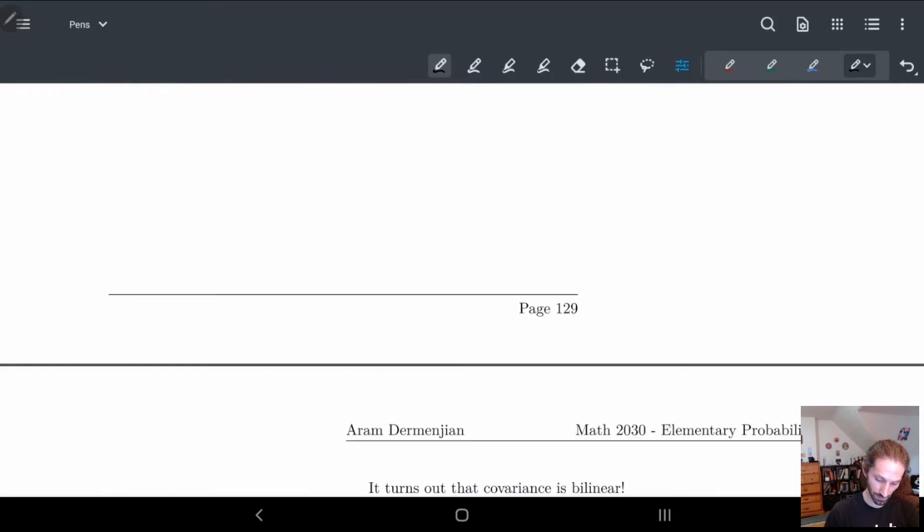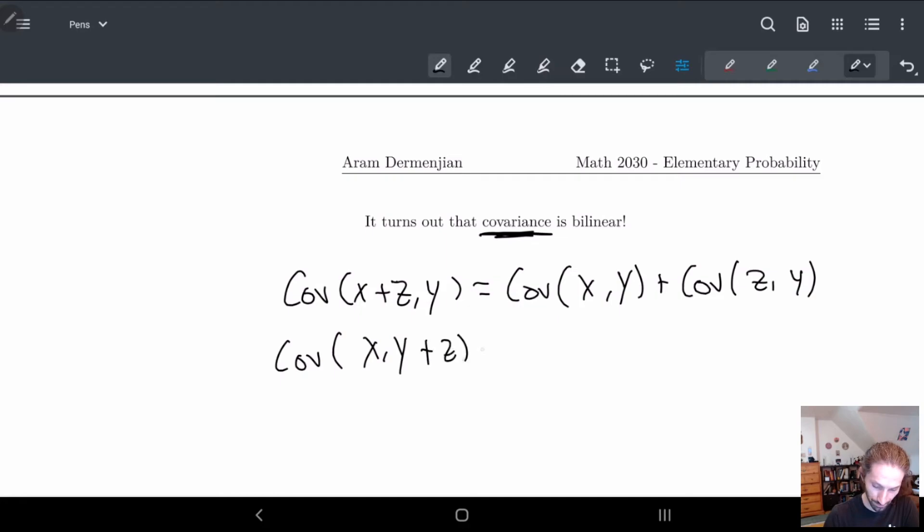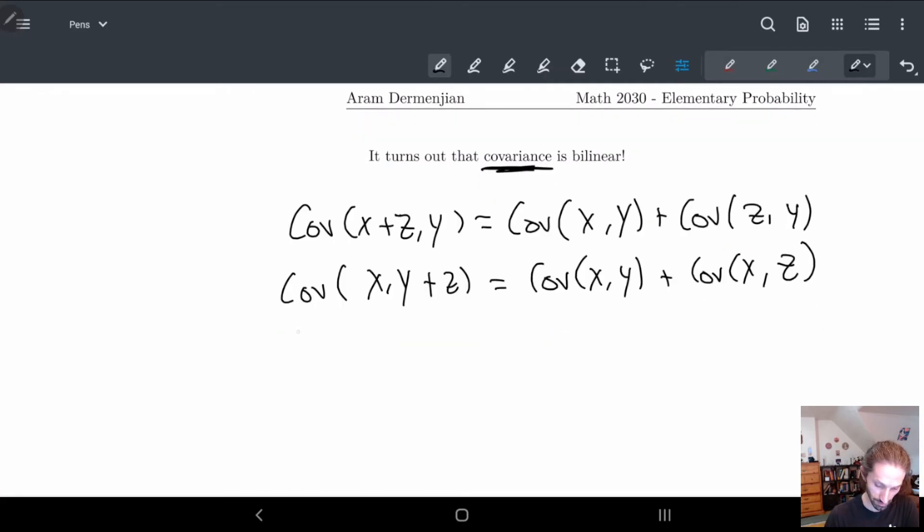Now the cool thing and the last page of your notes I'm sure you're all super happy is that covariance is bilinear. So in other words covariance of x plus z of y this is equal to the covariance of x of y plus the covariance of z of y. And you can do the same thing for the second term. y plus z. Covariance of x y plus covariance of x z. And you can do the constants. Covariance of ax times covariance of x y. And you can do this for the second term as well. ay is equal to a times covariance of x y.